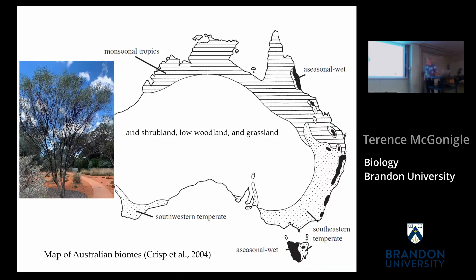Our typical understanding of what Australia looks like is this arid area with highly weathered tropical soil that's rather orange and red in color. There are a few sparse trees, a few shrubs, and this is our arid shrubland, low woodland, and grassland occupying much of the central part of Australia. This biome summary is from CRISP 2004.